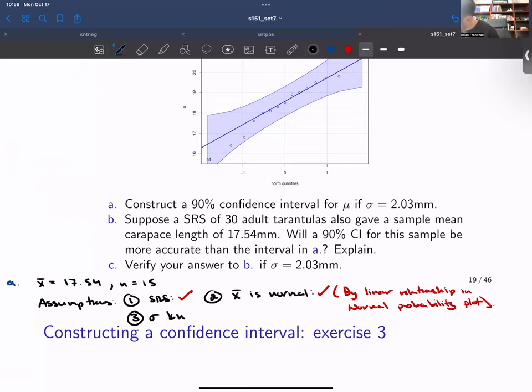The third assumption is that sigma is known. And in part A, we're told sigma is 2.03.